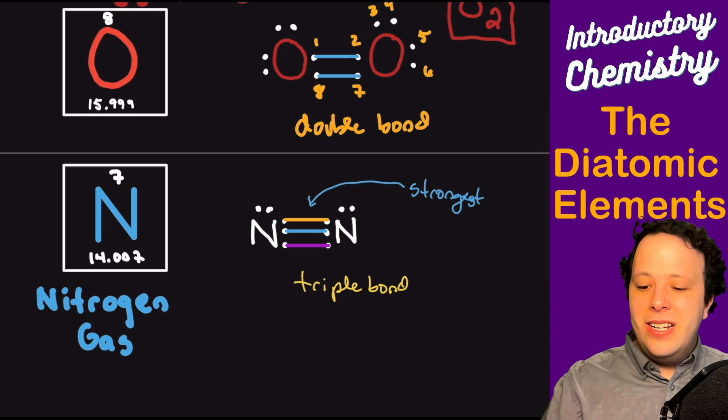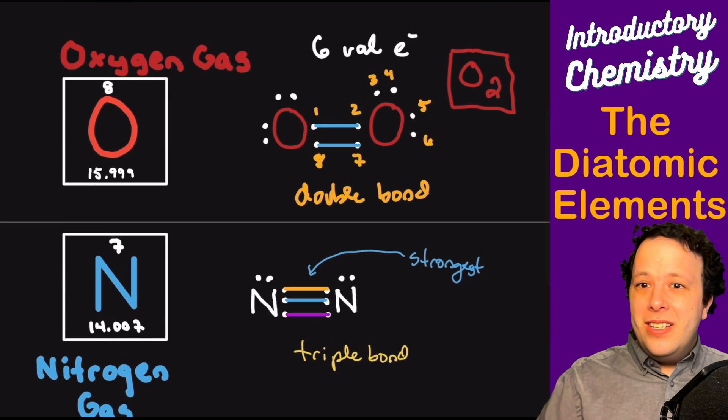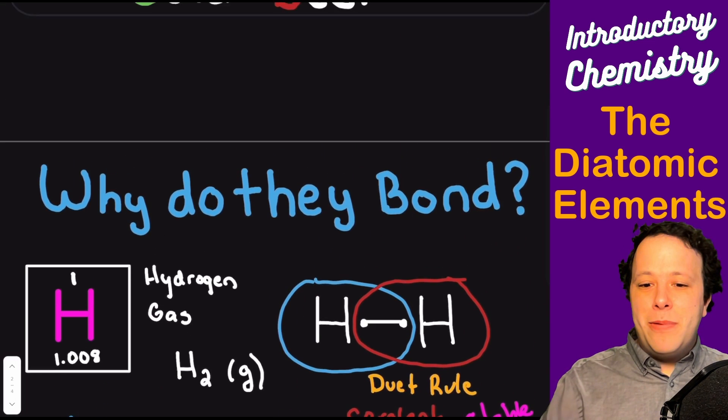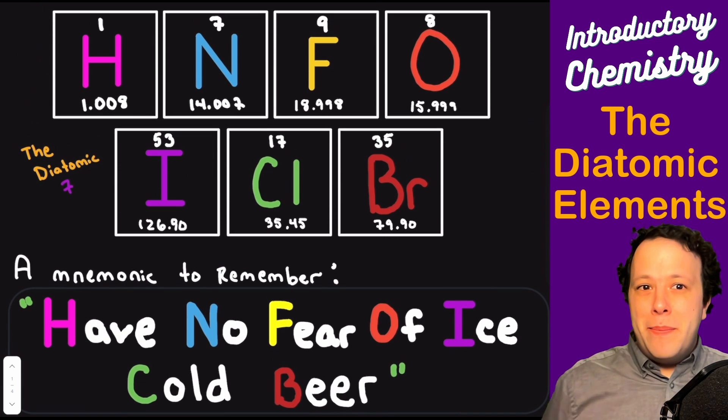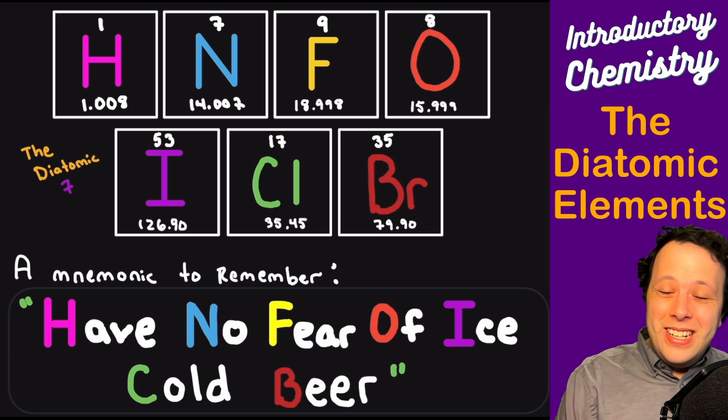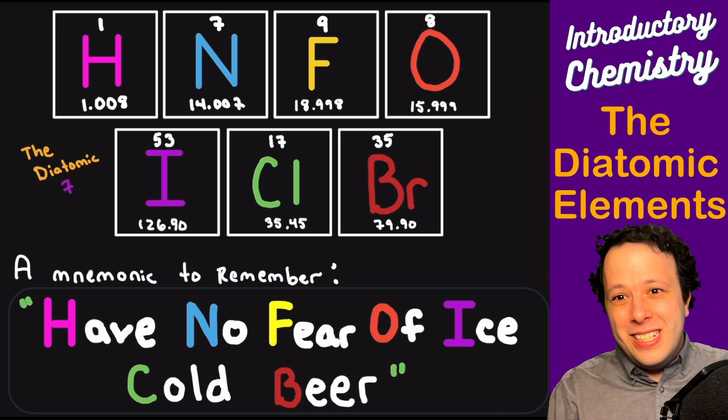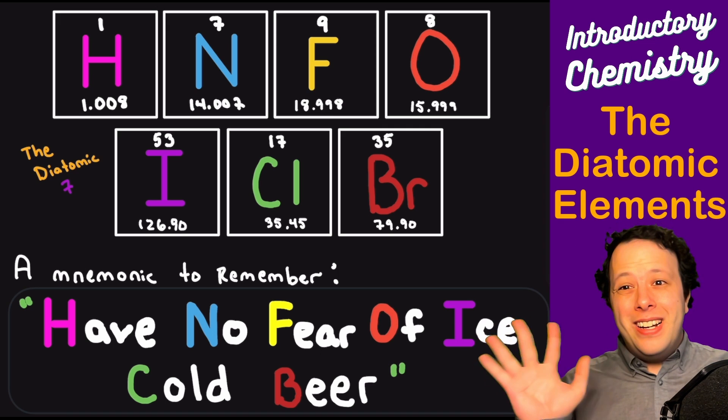These have been the seven diatomics. As I mentioned before, just always keep remembering: Have No Fear Of Ice Cold Beer, and you'll be able to remember all of your diatomics moving forward in your chemistry course. This has been Dr. Dan. Thank you so much for listening, and just remember, Have No Fear Of Ice Cold Beer. I'll see you all later. Bye now.